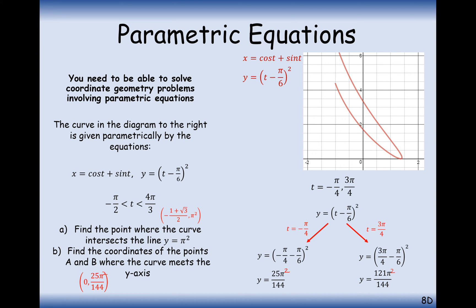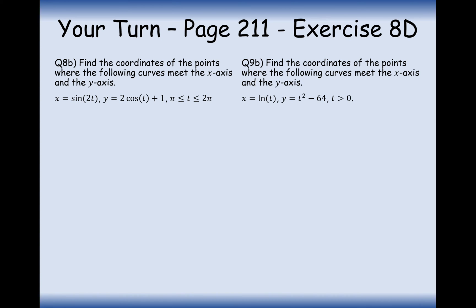So the two coordinates are (0, 25π²/144) and (0, 121π²/144). Across these three examples, when finding intersections on one axis, set that axis coordinate equal to zero, solve for the t values, and substitute those t values into the other equation to get the full coordinate. Now your turn — pause the video and try the two practice questions.